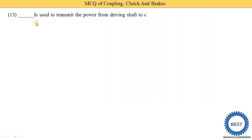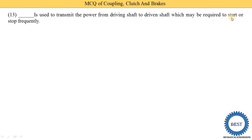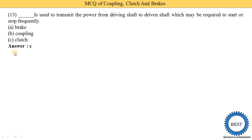Fill in the blank: ______ is used to transmit power from driving shaft to driven shaft, which may be required to start or stop frequently. Option A: brake, option B: coupling, option C: clutch. The answer is clutch — option C is the correct answer.